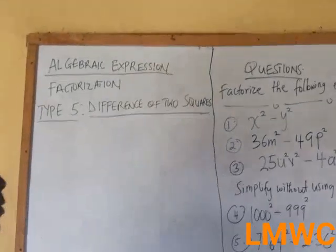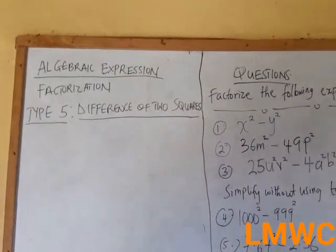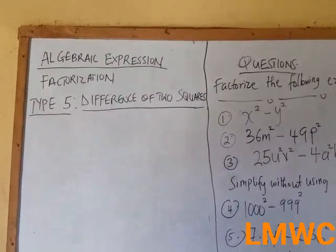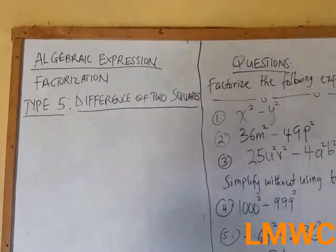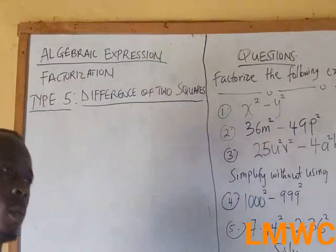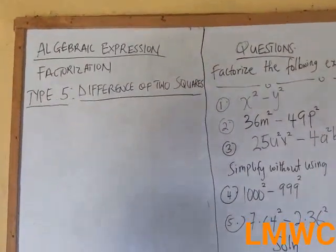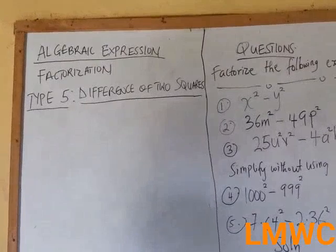We are still under factorization, and this is the last session under factorization, which is Type 5 — difference of two squares.